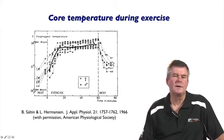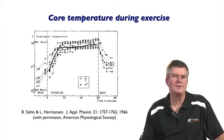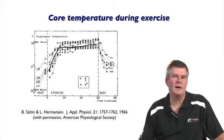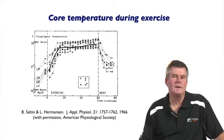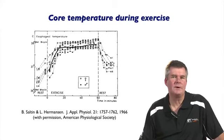The reason for this step increase is that the rate of heat production increases quite rapidly at the onset of exercise, while the rate of heat loss is somewhat slower. There is an error signal in the regulation of body temperature — it's not regulated at a different level, it's just that the balance of heat loss and heat production is out of balance early on, resulting in a rise in core temperature initially, and then it tends to level off.